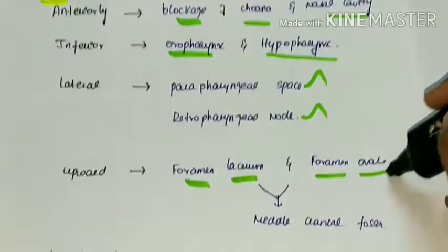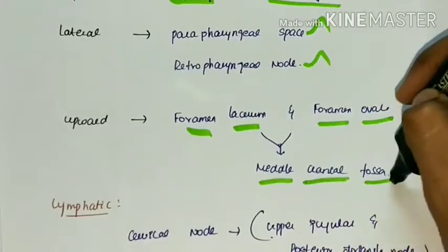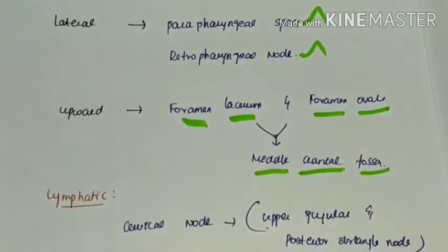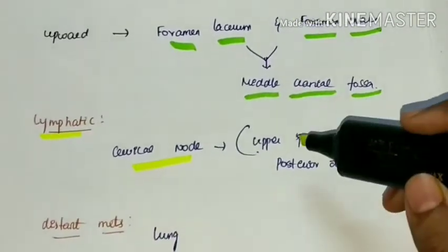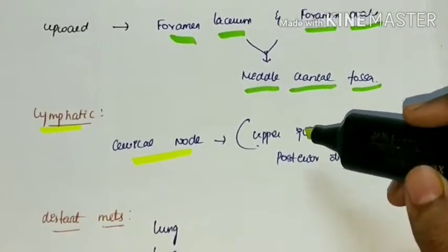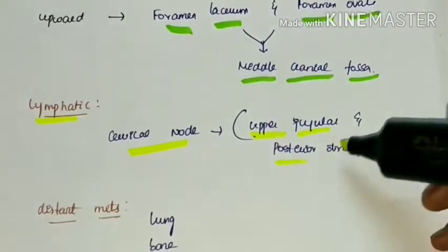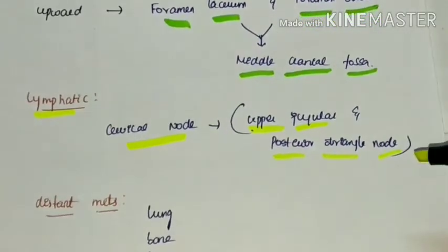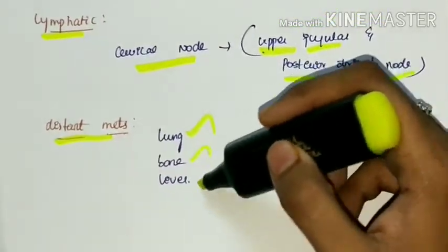Through which it can enter the middle cranial fossa. Next, lymphatic spread - cervical lymph nodes are the first nodes to be seen enlarged, affecting the upper jugular and posterior triangle nodes. Next, distant metastasis - it can metastasize into the lung, bone, and liver.